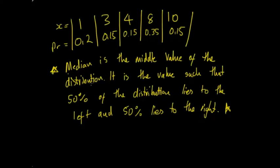The median is the middle value of the distribution. It's a value such that 50% lies to the left and 50% lies to the right.